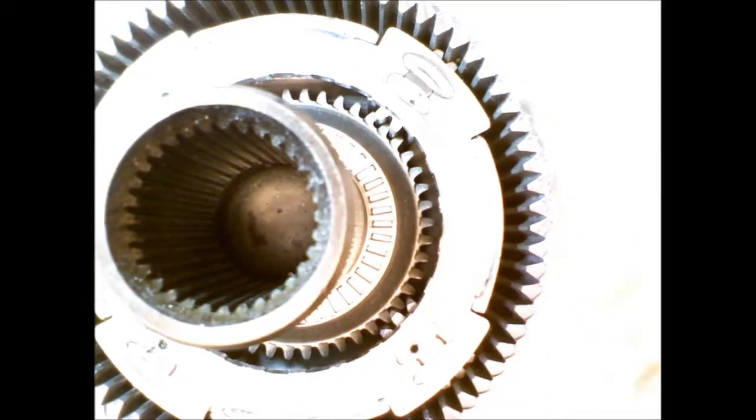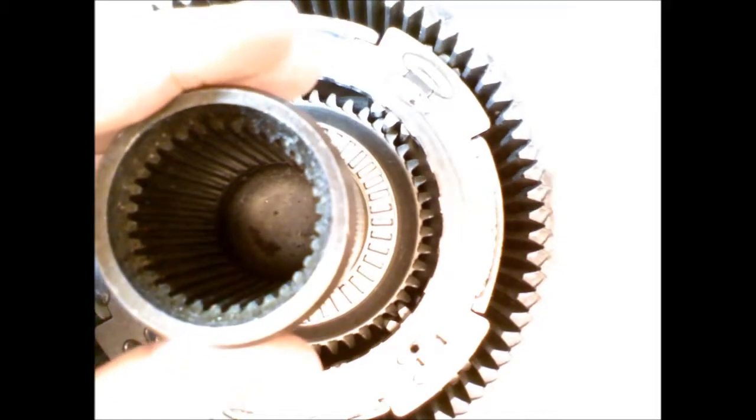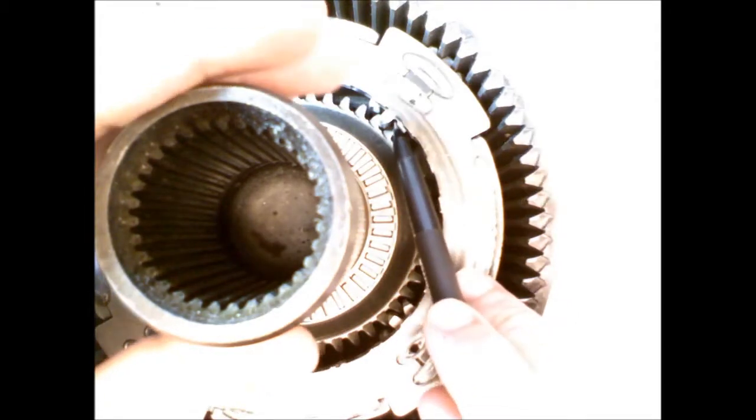Here's another example of a bearing. This is a planetary gear set from a large automatic transmission. If I move the sun gear, you can see the planet carrier that is staying fixed. And we can see how the sun gear meshes with the planet gears.